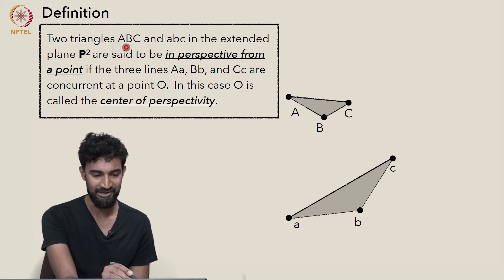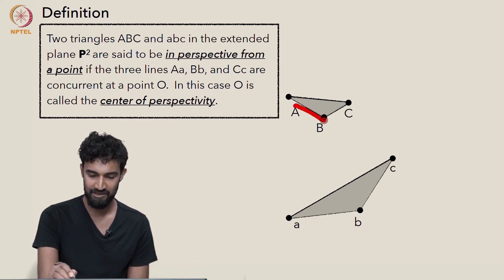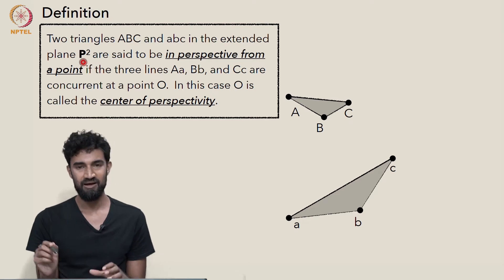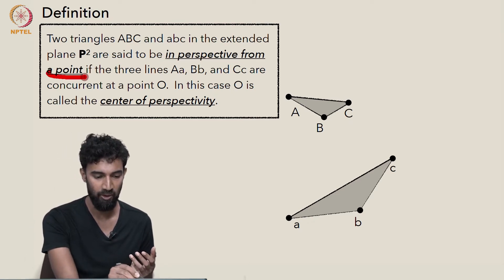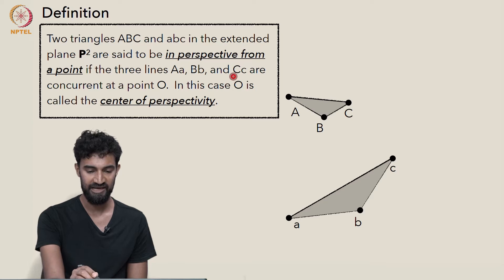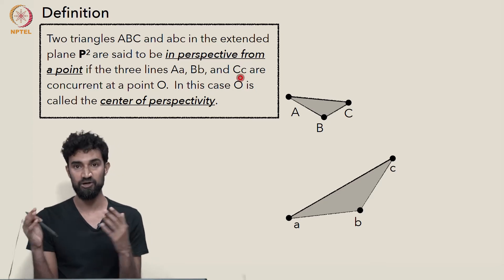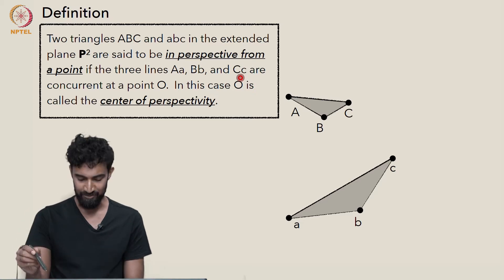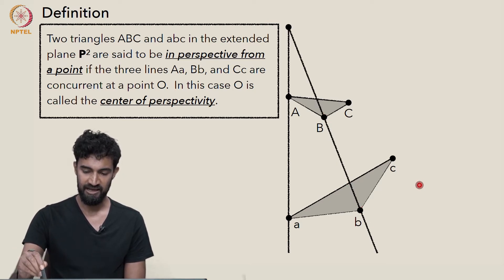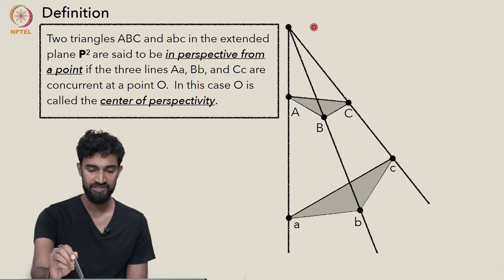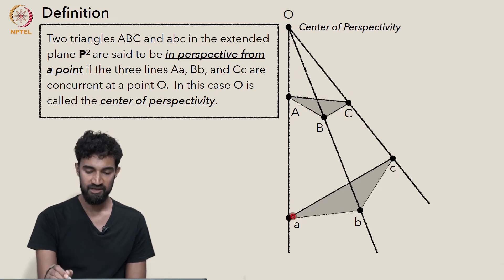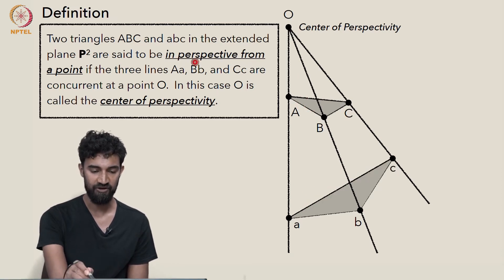Two triangles, capital ABC and little abc, in the extended plane P2 are said to be in perspective from a point if there are three lines — capital A to little a, capital B to little b, and capital C to little c — which are concurrent. If those three lines are concurrent at a single point O, then we say these two triangles are in perspective from a point.